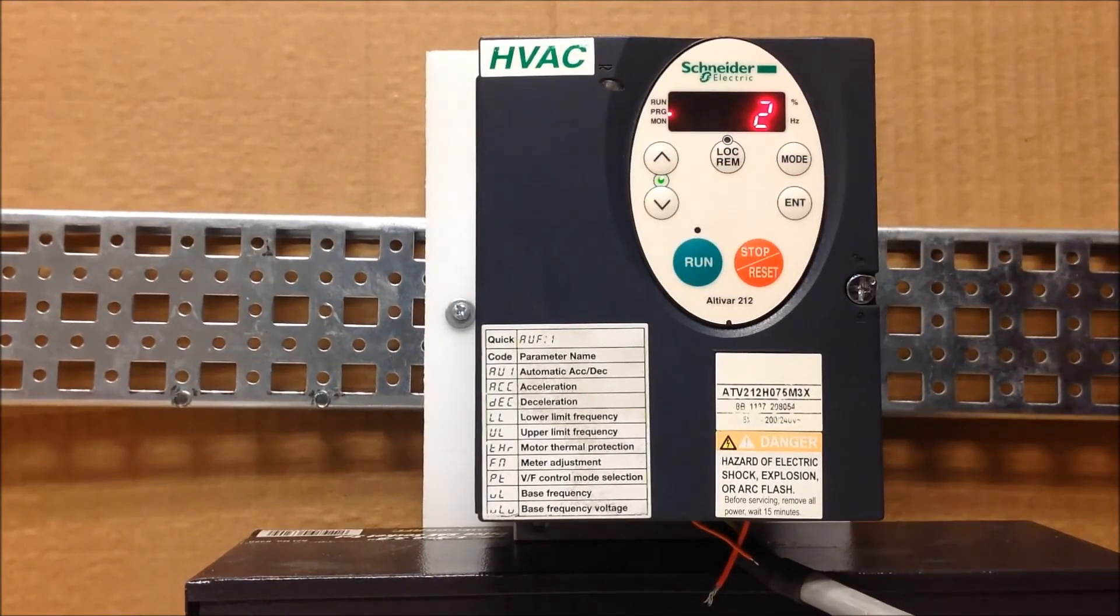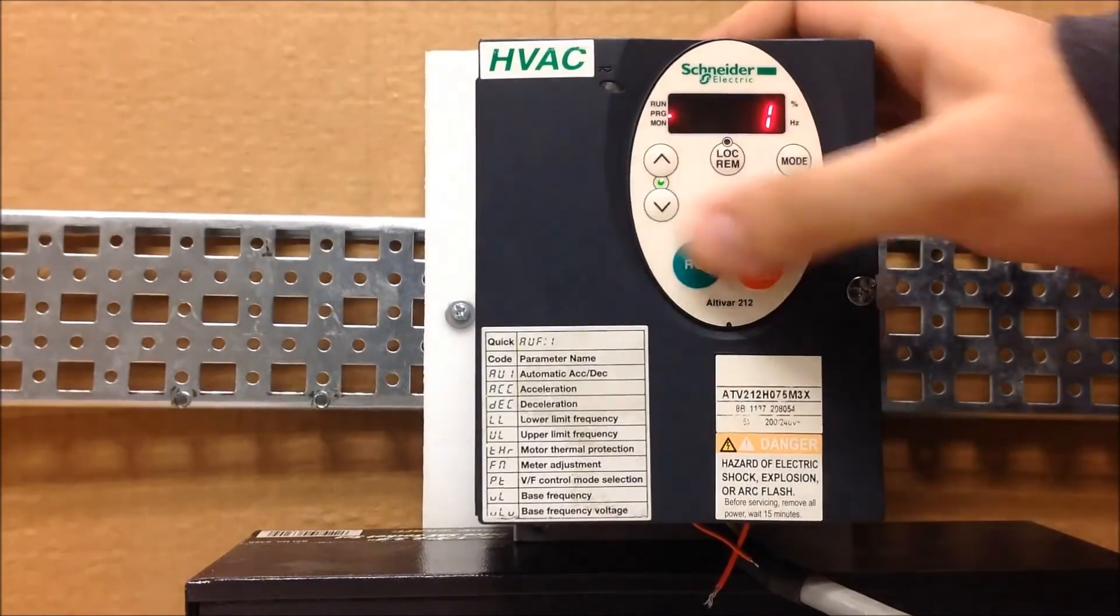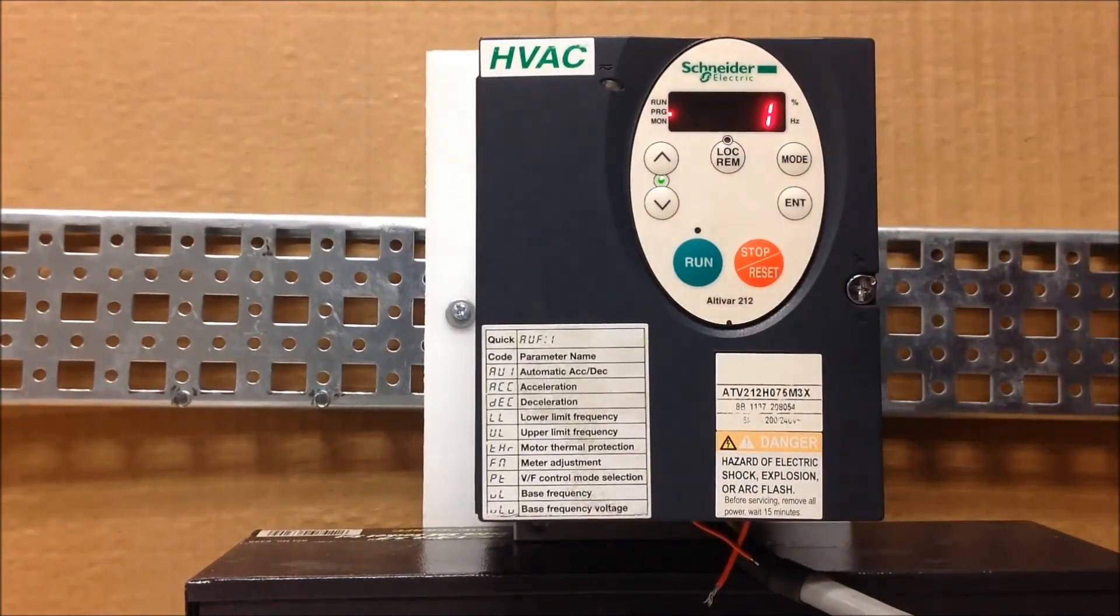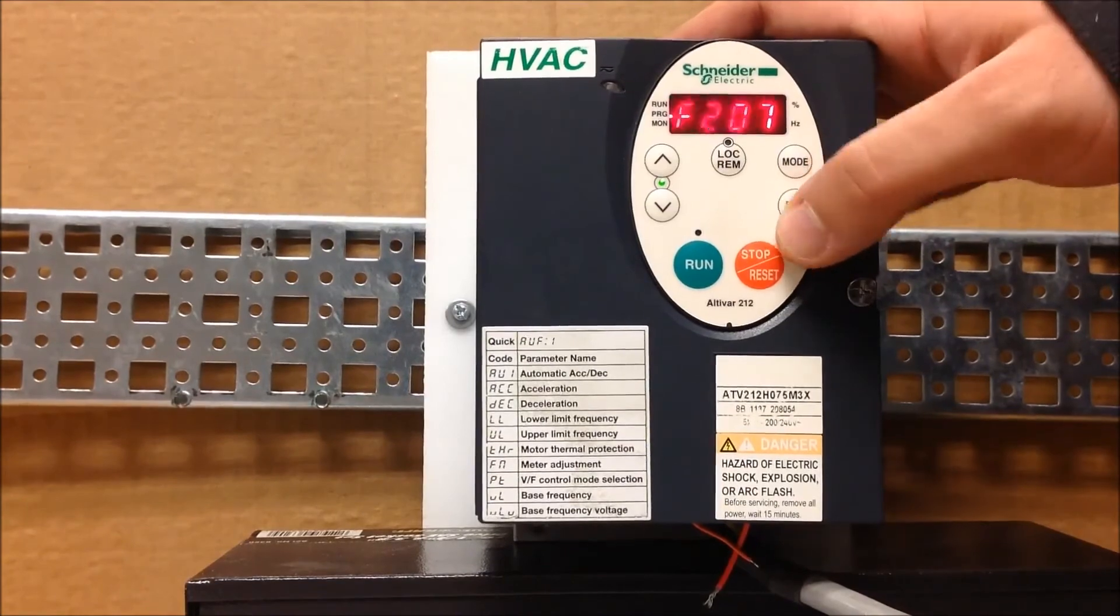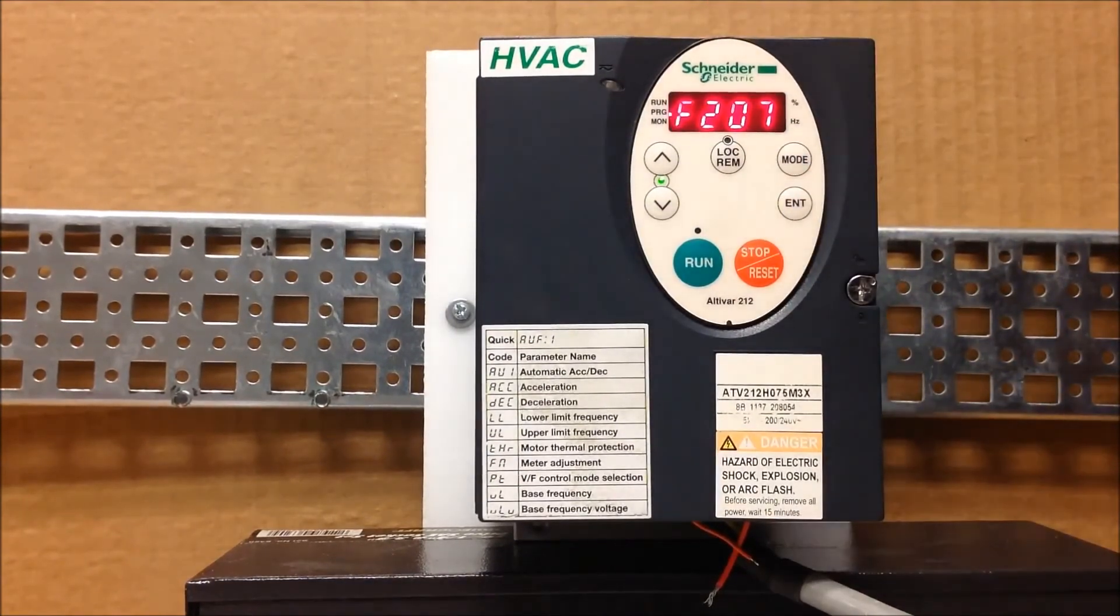You have some values you can program here, one through five just like the FNOD value. One is VIA, two is VIB, three is the keypad if you want to use that as a second source, four is communications, and five is plus or minus speed. Let's just say we're going to make it one for VIA. You're basically done programming this particular function.